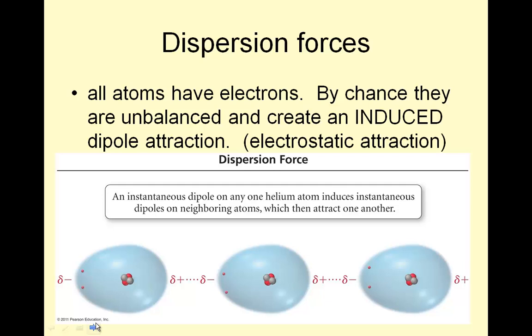Dispersion forces. All atoms have electrons. By chance, they are unbalanced and create an induced dipole attraction, which is electrostatic attraction. For example, if I have an atom right here, and it has 10 electrons, there is quite possible that I could have 6 on one side and 4 on the other, just by them going all over the place. So this side would be a little bit negative. This side would be a little bit positive. So if that happens over here, notice how if I had 2 electrons, I'd have 2 over here. And this side would be delta positive, a little bit positive. And the one next to it, if this is positive, these electrons go, ooh, that's positive. Let me check that out. And they create a little bit of a negative charge. And create a positive charge over here. So an instantaneous dipole, that's by chance, induces an instantaneous dipole in a neighboring atom.